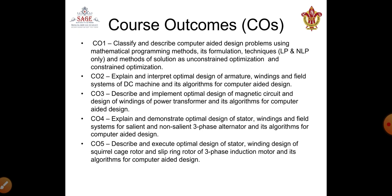The methods of solution include unconstrained optimization and constrained optimization. These formulate the outcome from the first unit. Similarly, we have outcomes for units two, three, four, and five under CO2, CO3, and CO4 respectively.